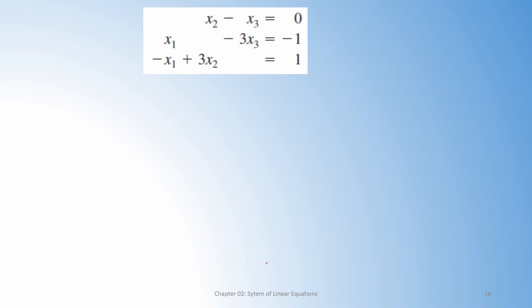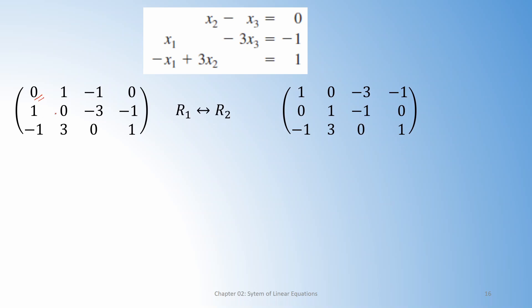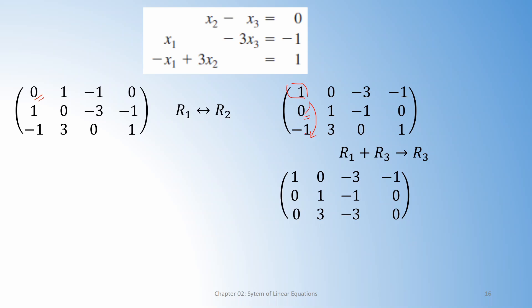Consider this linear system and its corresponding augmented matrix. We interchange the first and second rows so the leading entry becomes 1. We then ensure all entries below this pivot are 0 — the second row is already okay, but we add a multiple of the first row to the third row to make that entry 0. This gives: row 3 becomes 0, 3, minus 3, 0.